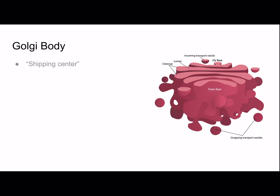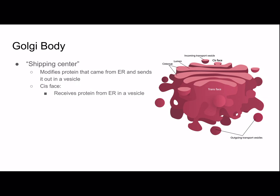The Golgi body is basically a shipping center. It modifies the protein that came from the endoplasmic reticulum and sends it out in a vesicle. As you can see in the picture, there's a cis face where the protein is received from the endoplasmic reticulum in a vesicle — incoming transport vesicle. The trans face packages the protein to be sent out in a vesicle. You can see why some people might call it a shipping center, because it receives packages and ships them out.